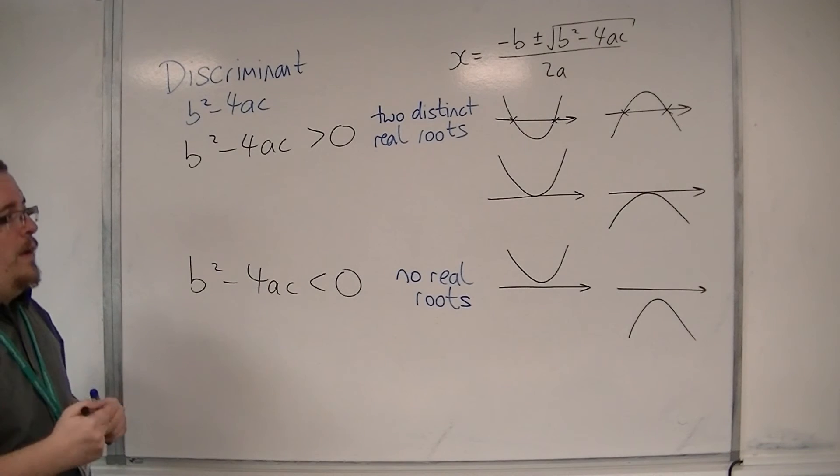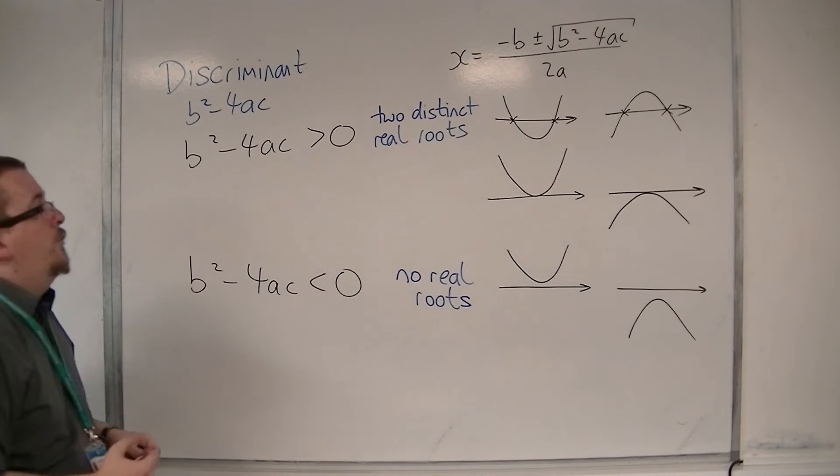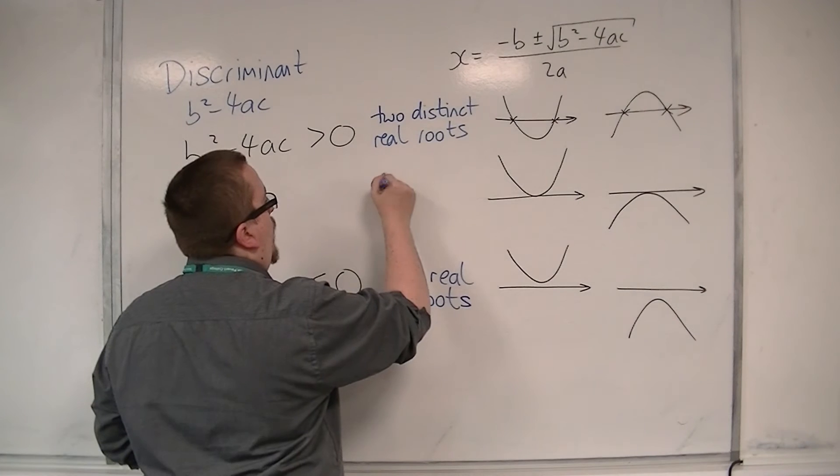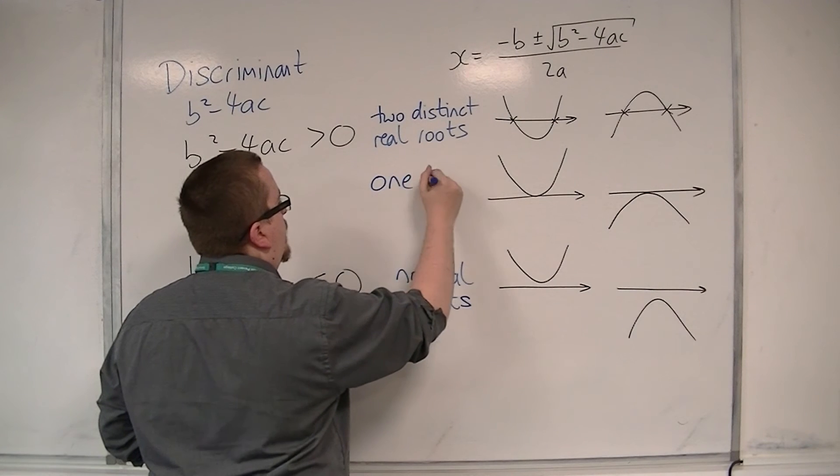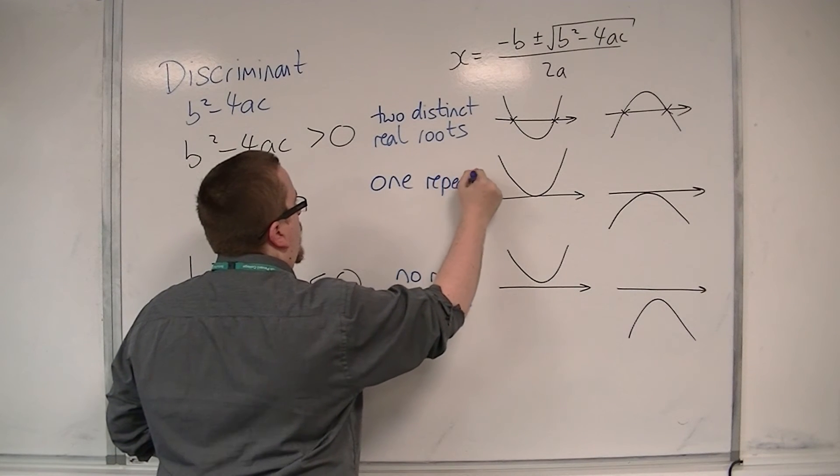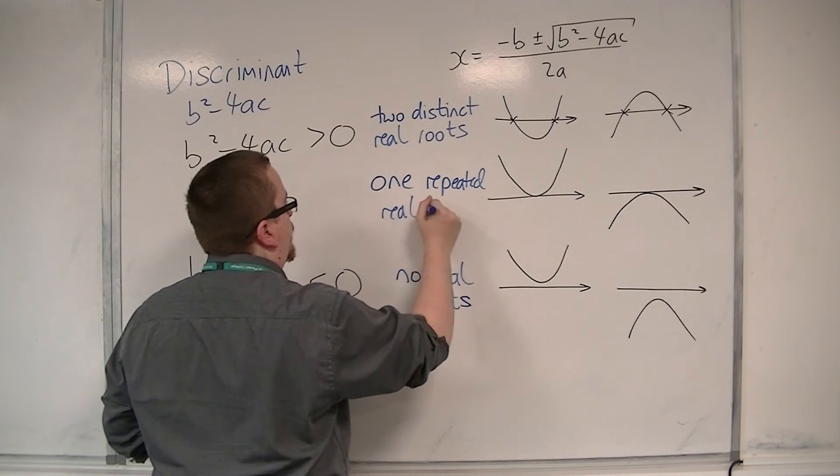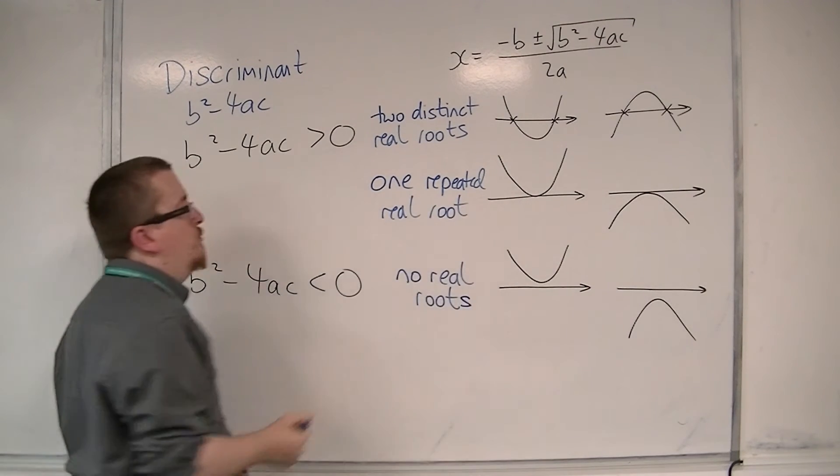So that would mean that we have one real root, and it's known as one repeated real root, or just one repeated root.